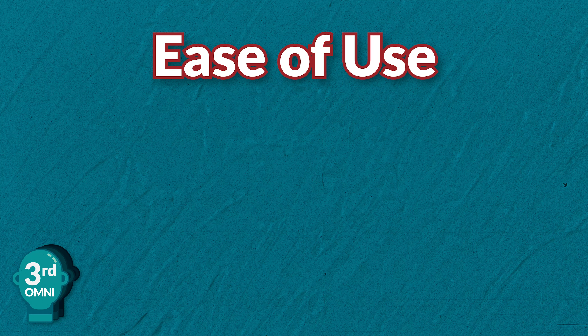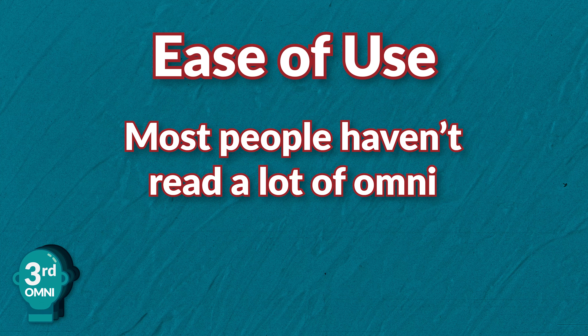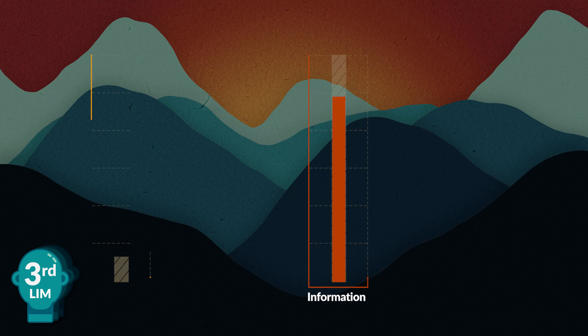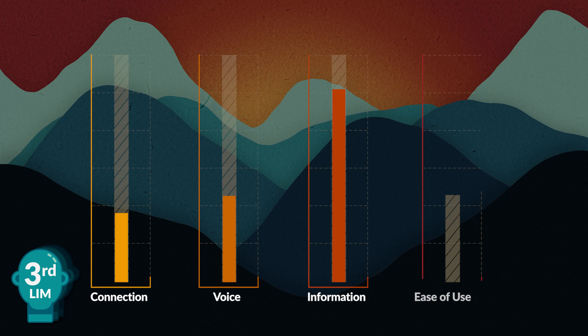How hard is it to write in omniscient? It depends. Since most modern fiction isn't omniscient, the average reader probably hasn't read a lot of it, so you might run into some issues — it's always harder to write in a point of view you haven't read a lot of. Omniscient is also particularly full of show-don't-tell pitfalls. Since the narrator knows everything, it can give the writer too much leeway to tell details instead of showing them. More advanced writers will naturally know when to show rather than tell, but if you don't have that instinct yet, omni can develop bad habits. So while omni excels at conveying information, it's not great for connection and voice and can sometimes be difficult to write.